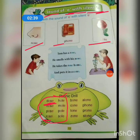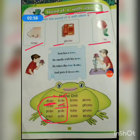Fifth one: H-O-L-E, hole. M-O-L-E, mole. P-O-L-E, pole. S-O-L-E, sole.